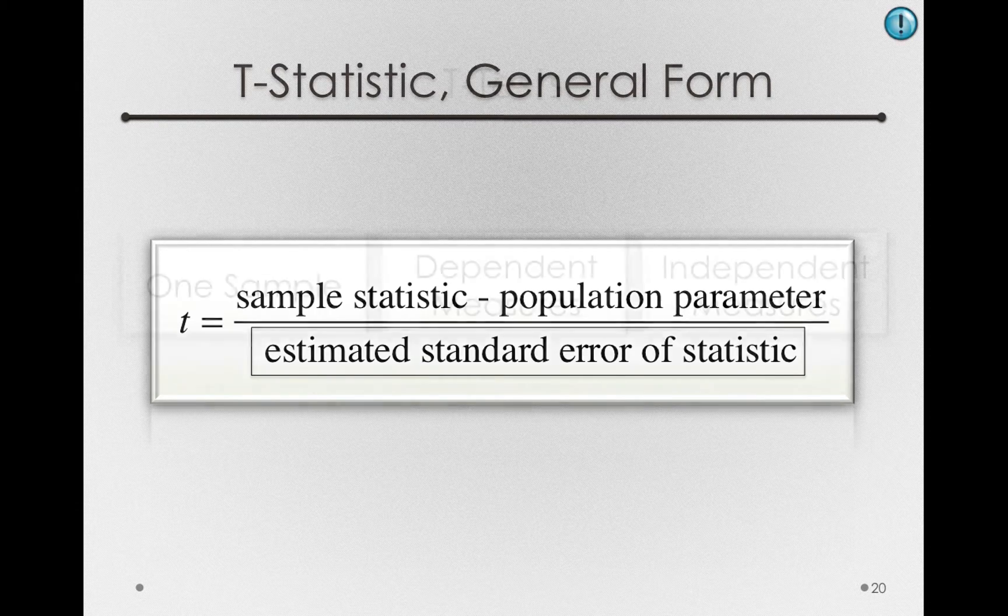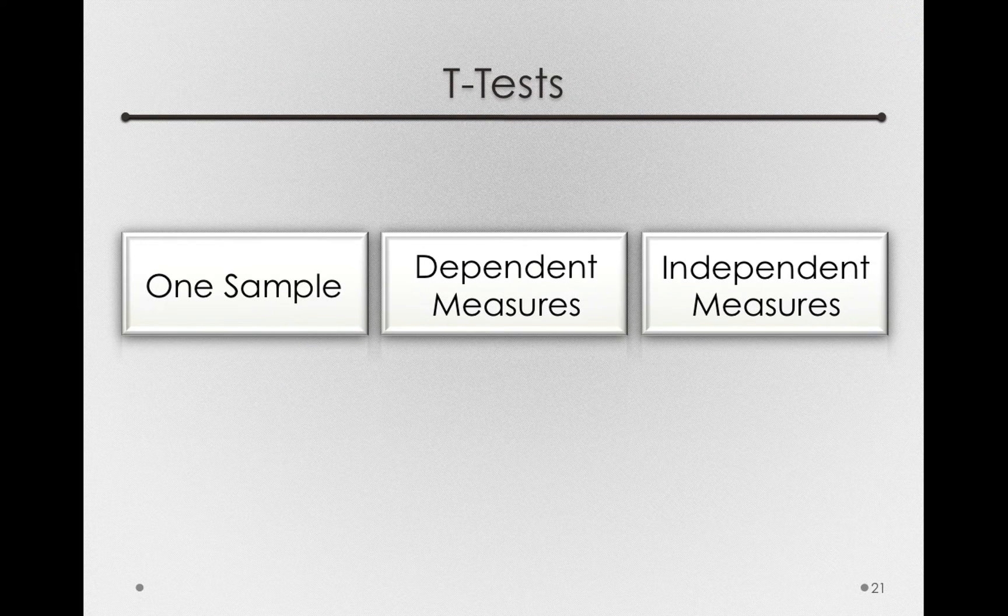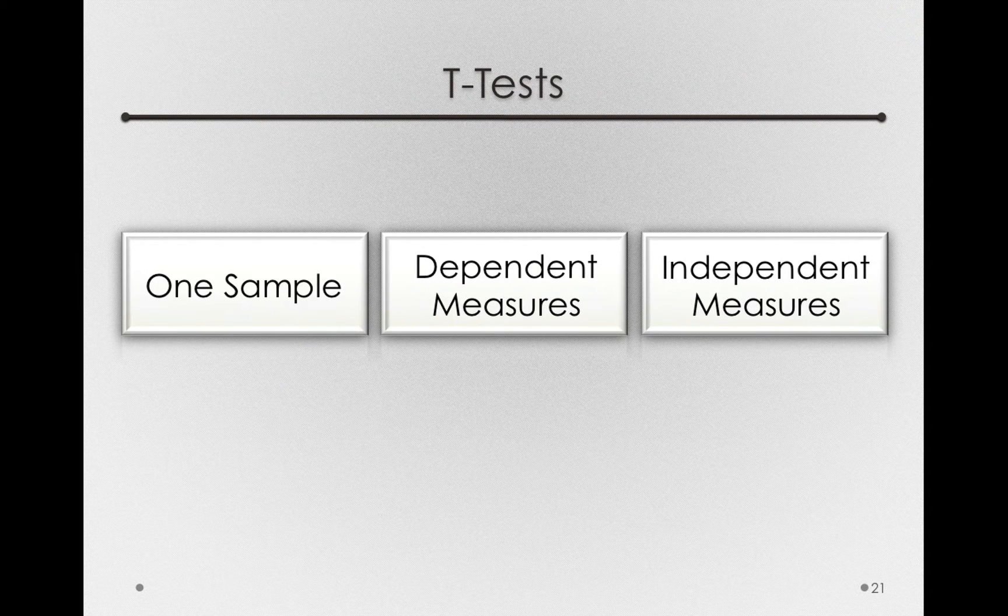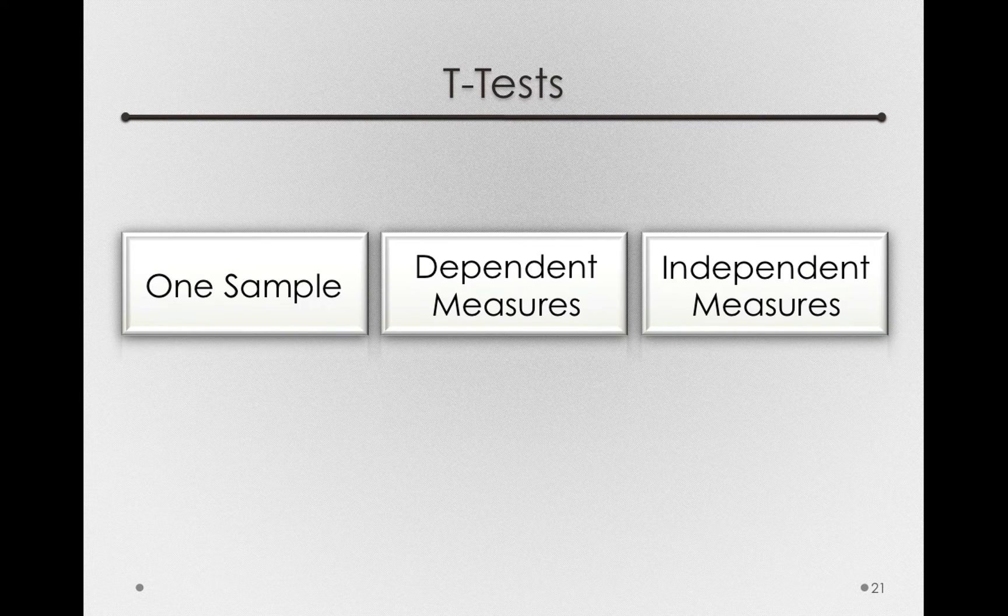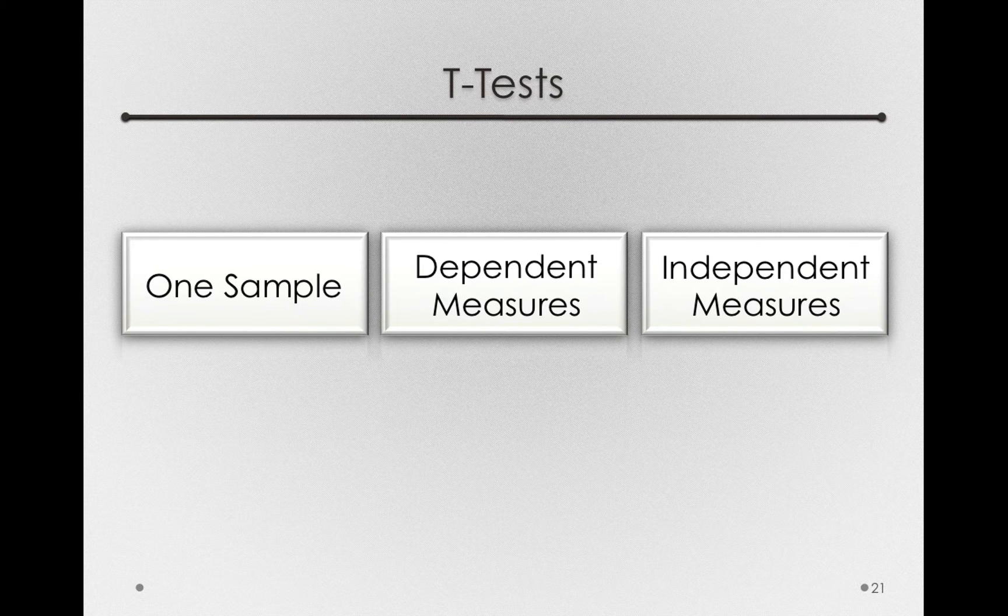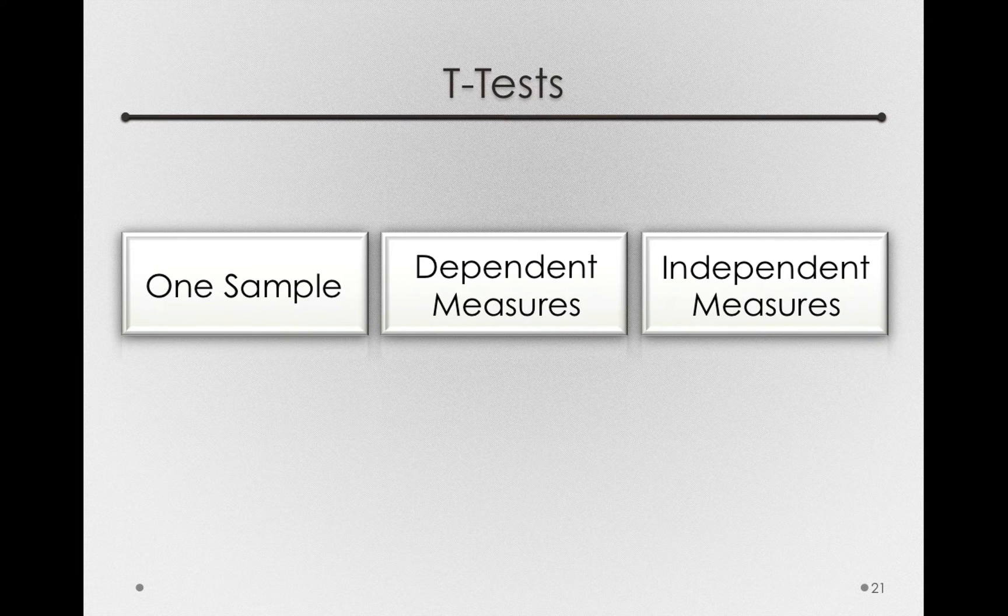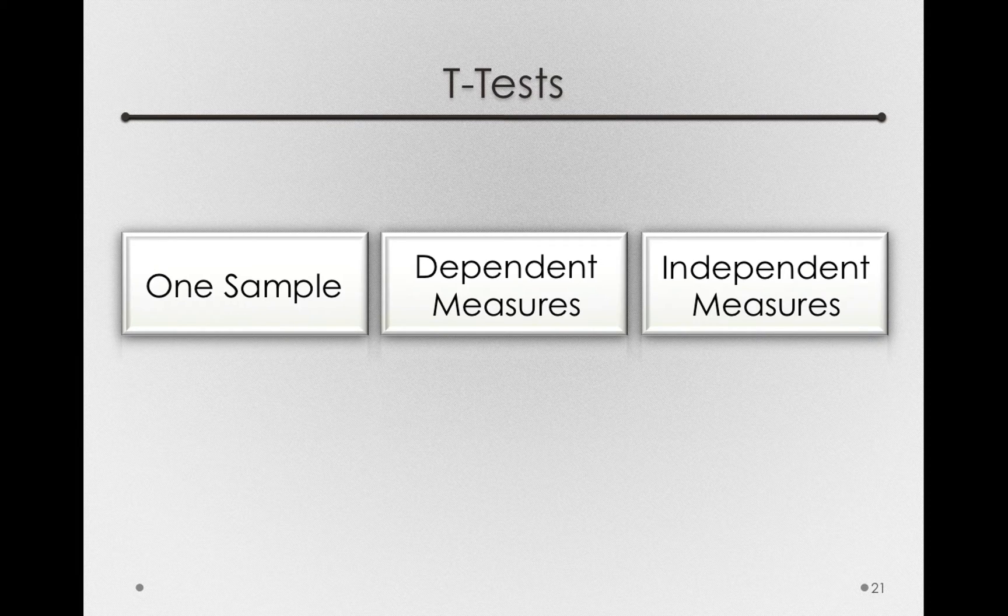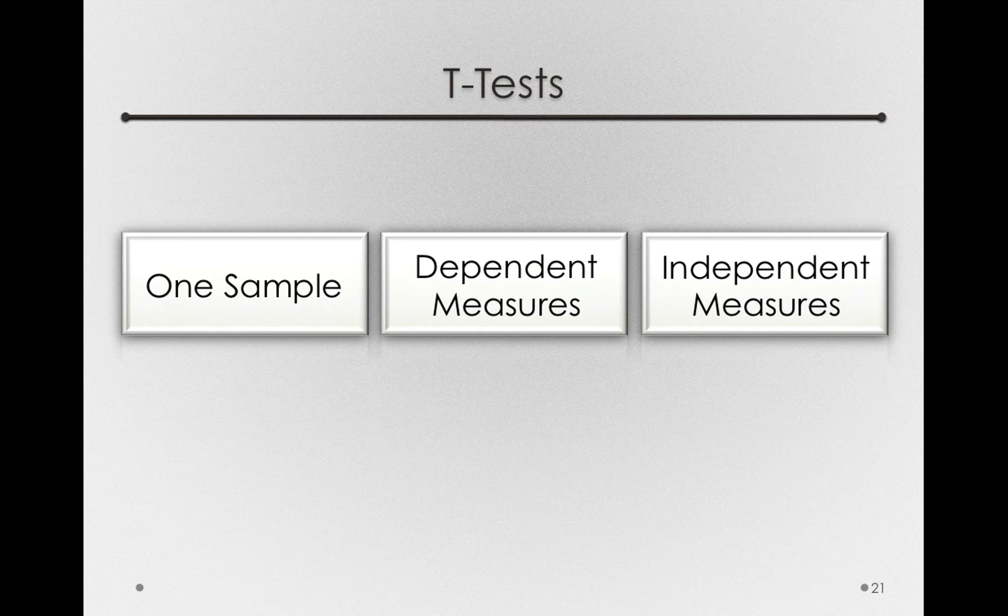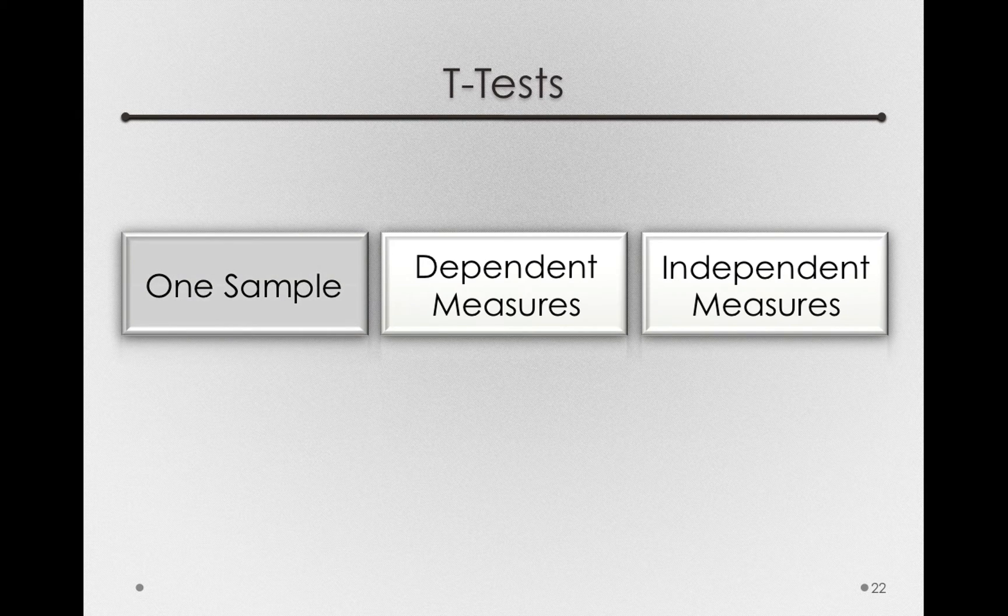In this module, we'll see three different types of t-tests. A one-sample test when we have a single sample from a population we know the mean of but don't know the variance of. Next, we'll see how to perform a dependent measures t-test, and finally an independent measures t-test. Let's start with the one sample t-test.